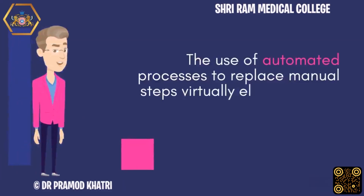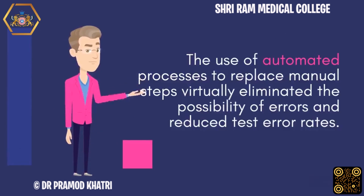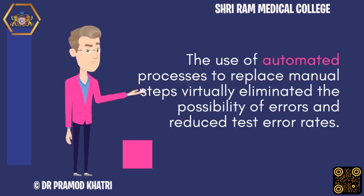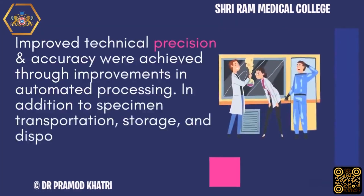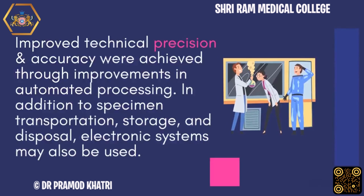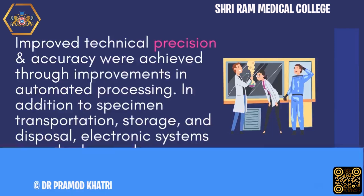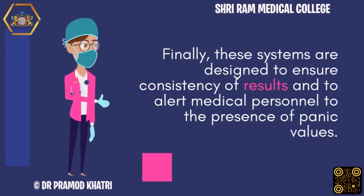The use of automated processes to replace manual steps virtually eliminated the possibility of errors and reduced test error rates. Improved technical precision and accuracy were achieved through improvements in automated processing. In addition to specimen transportation, storage, and disposal, electronic systems may also be used. These systems are designed to ensure consistency of results and to alert medical personnel to the presence of panic values.